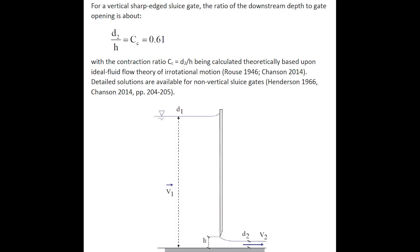For a vertical sharp edge sluice gate, the ratio of downstream depth to gate opening, also called contraction ratio, is equal to 0.61.